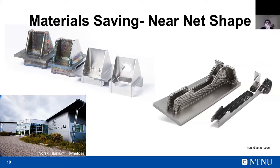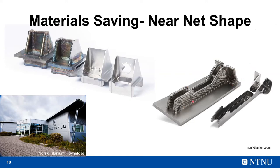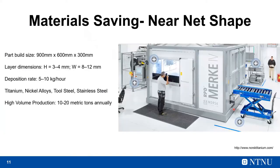This makes sense in the aerospace industry where parts are complex and made from expensive materials like titanium. Here you can see the near-net-shape part and the final part of a bracket used in the Boeing 787. These machines have build sizes close to one meter, a layer height of 3–4 mm, a width of 8–12 mm, and a deposition rate of 5–10 kg per hour. They produce nickel, titanium, tool steel, and stainless steel.